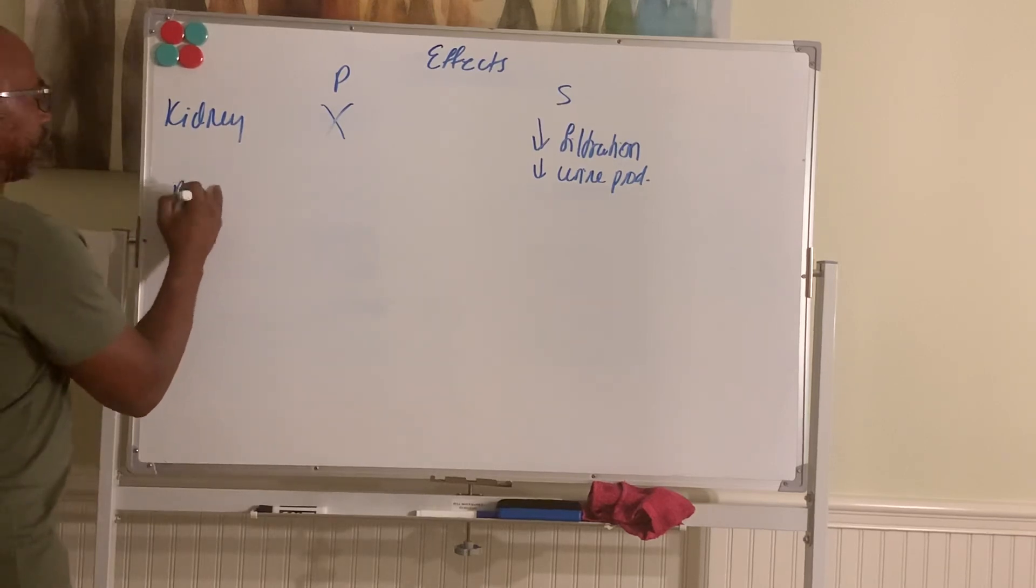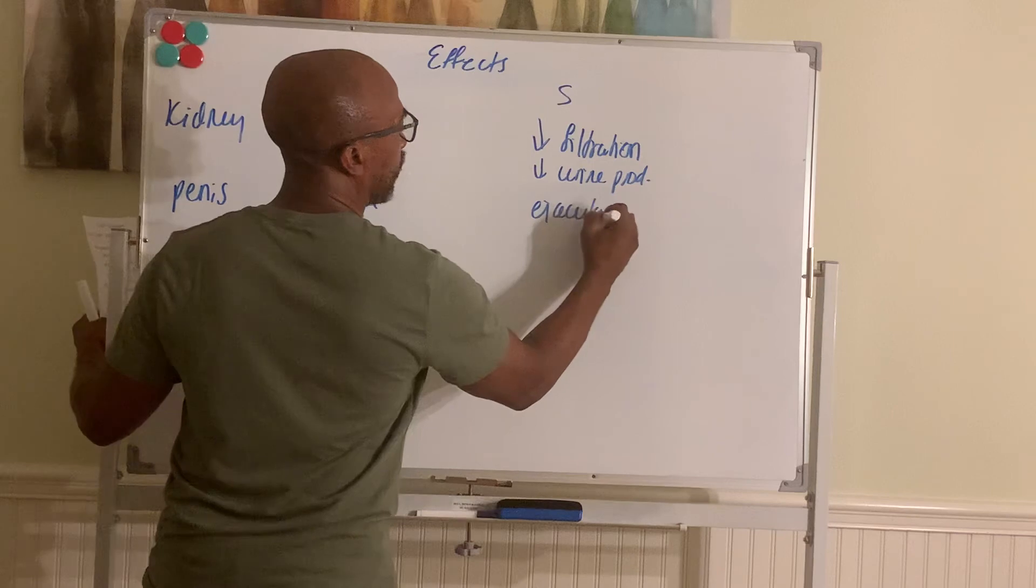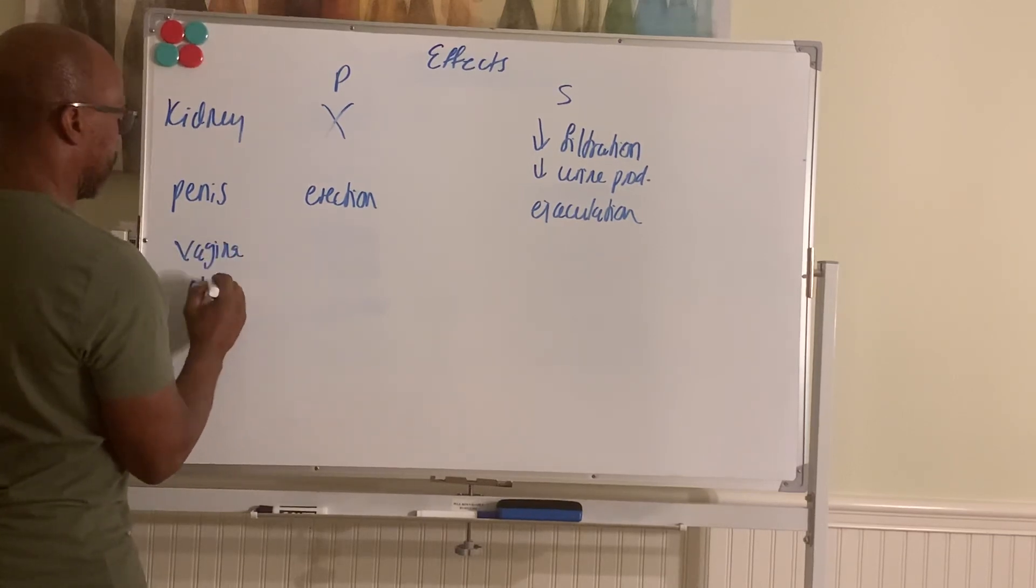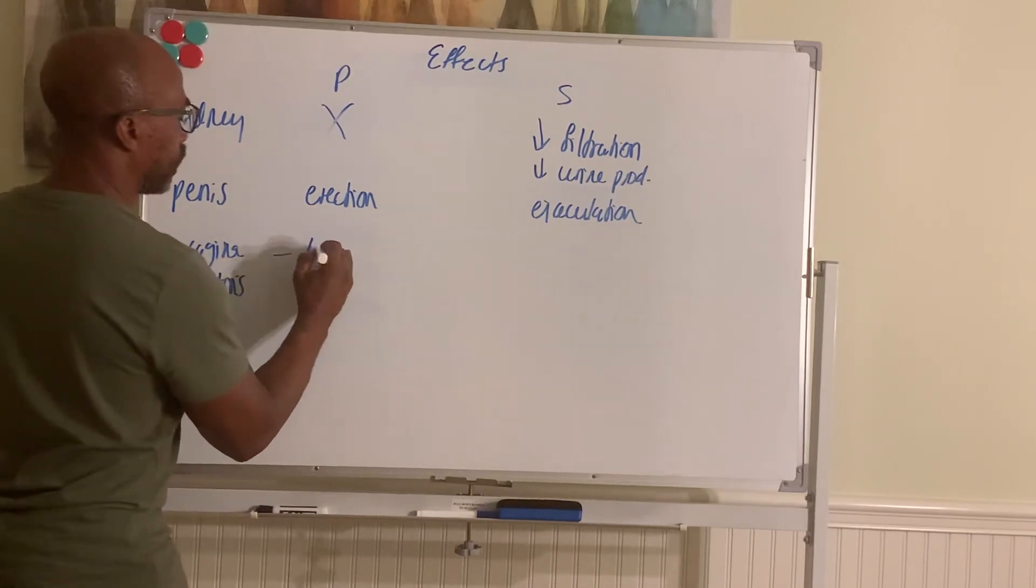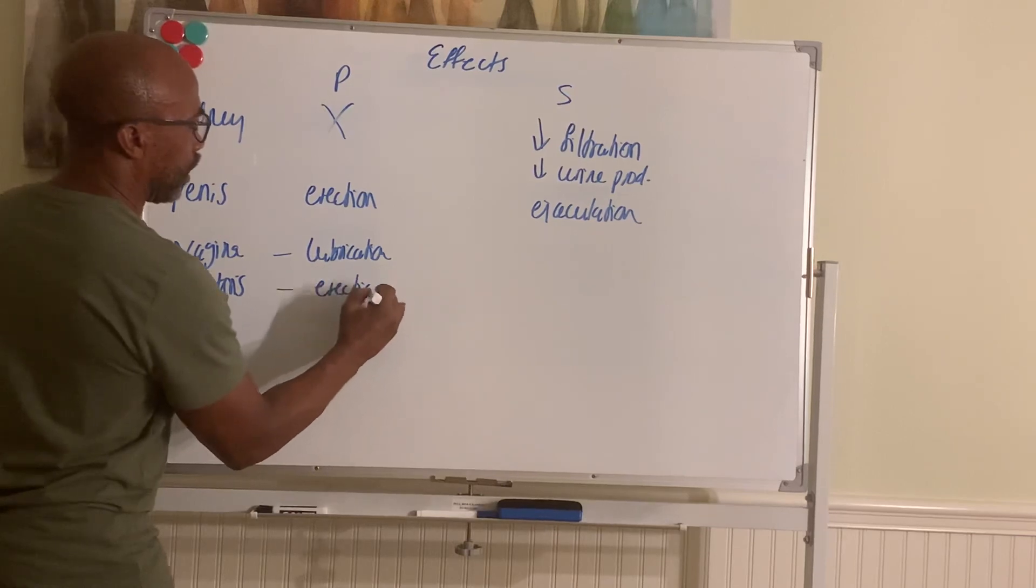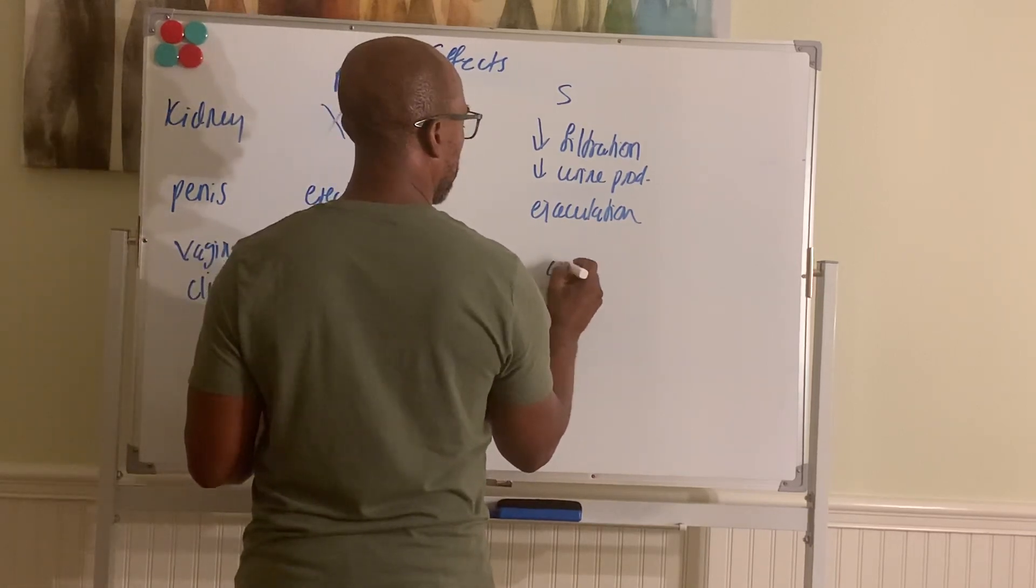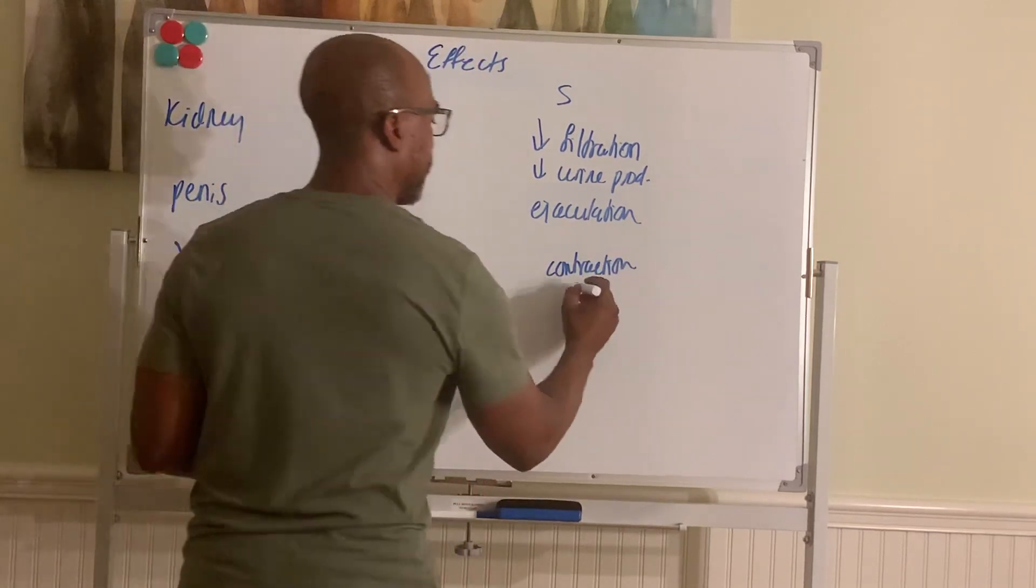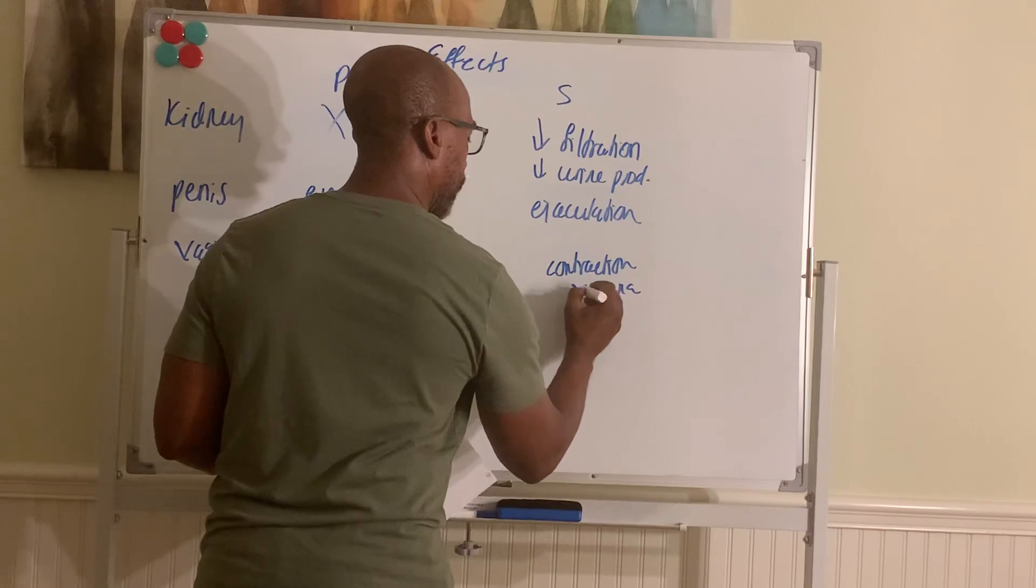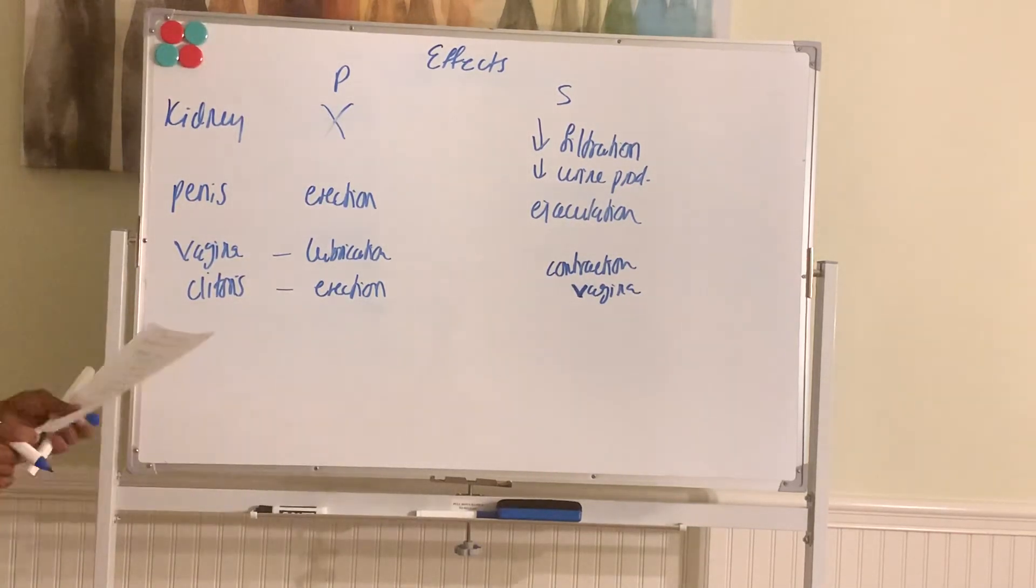And we have the penis. Here, para causes the erection. And simpa causes ejaculation. Same for the vagina. Here, the vaginal lubrication happens during para, the clitoris erection. And during ejaculation, you have contraction of the vagina. And the clitoris, I'm not sure what's happening there. In a penis, you can release something. But here, more so, it's just more muscular contraction coinciding with orgasms. Alright, we'll stop there.